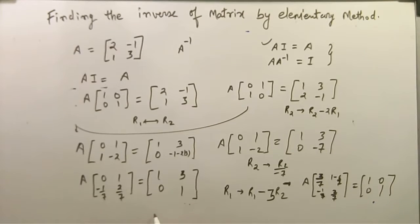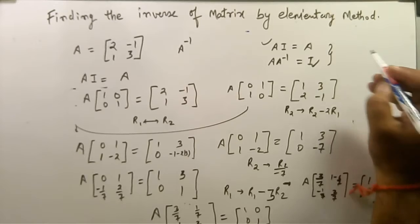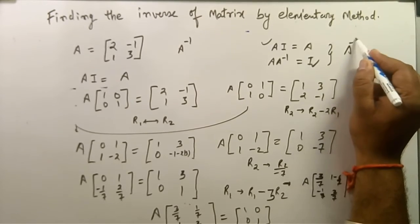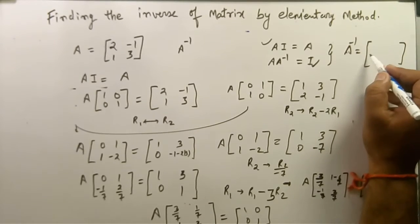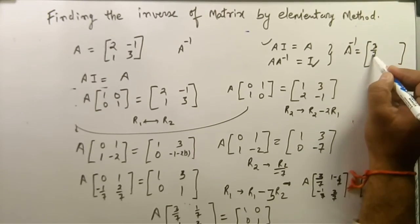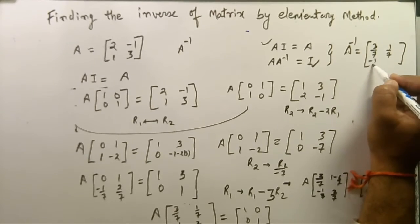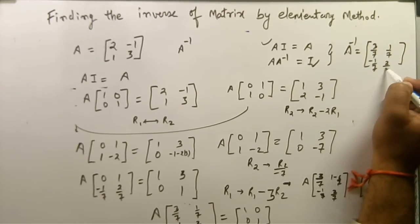So 3 by 7, 1 by 7, minus 1 by 7, and 2 by 7 is equal to 1, 0, 0, 1. By equation number 2, A inverse would be equal to 3 by 7, 1 by 7, minus 1 by 7, and 2 by 7.